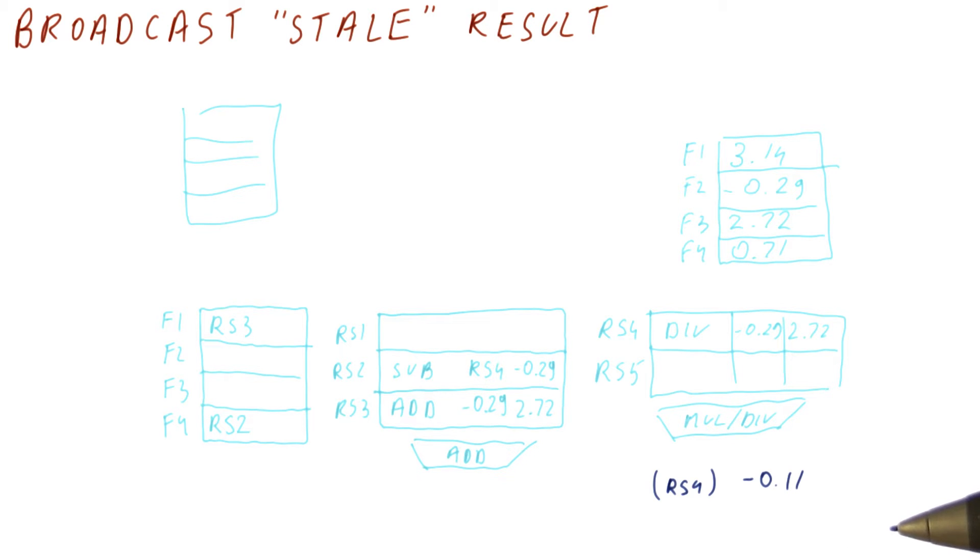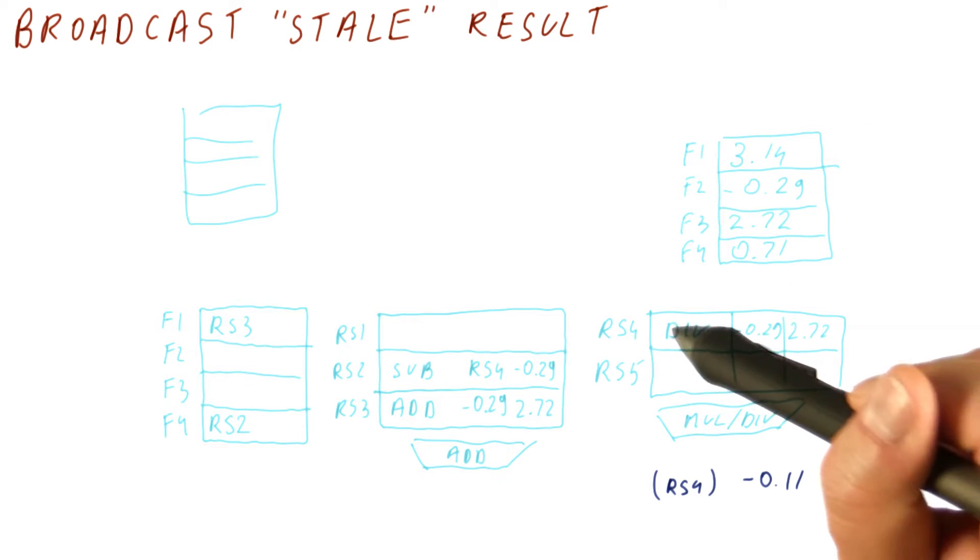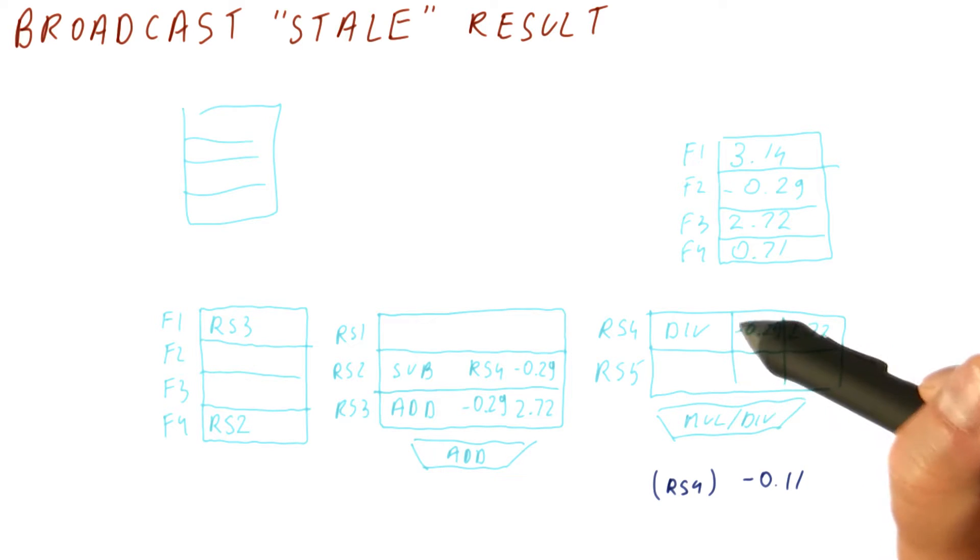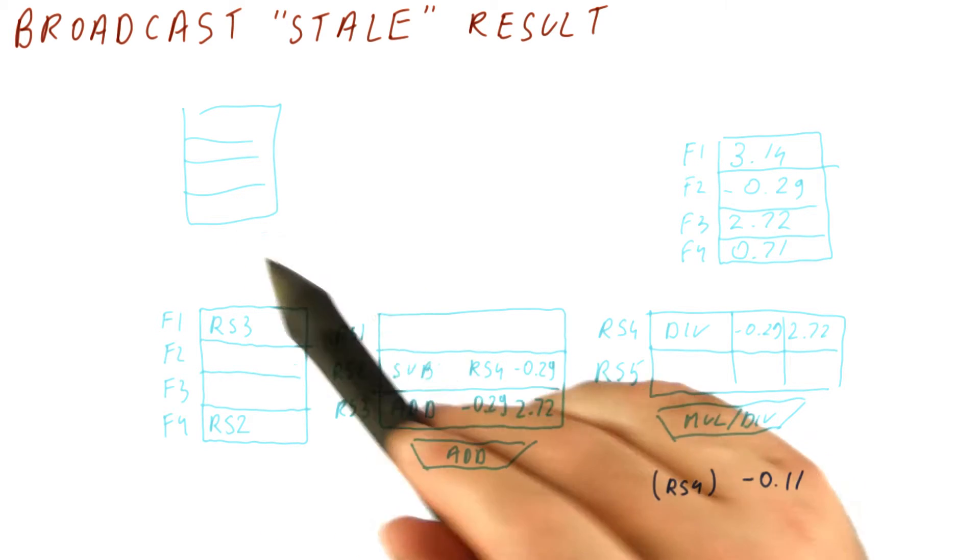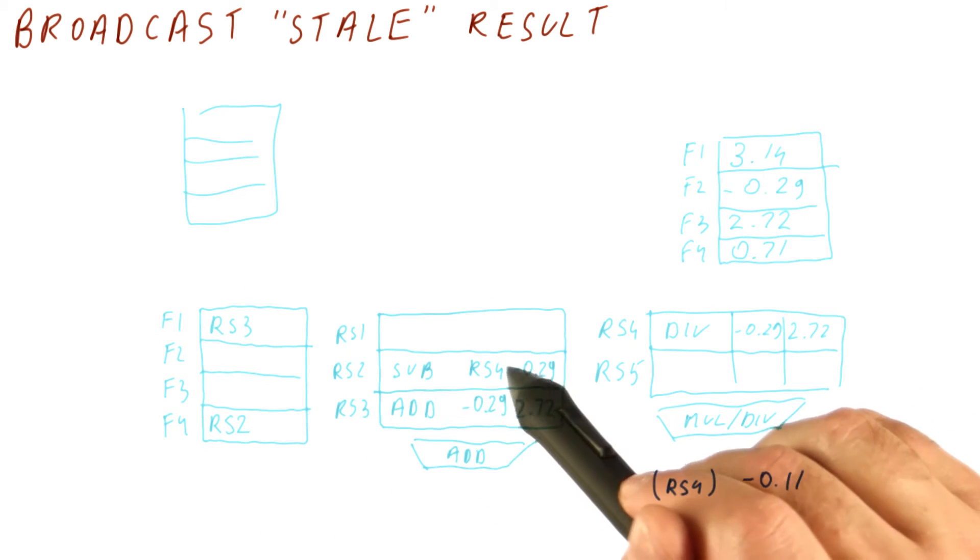So how can this happen? Well, one way of it happening is that when this instruction was renamed, let's say that F4 was renamed to be this result. So for a while, this was saying RS4. But then another instruction came, let's say RS2, this subtract.